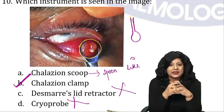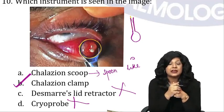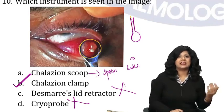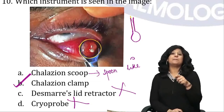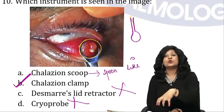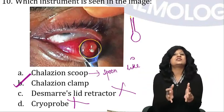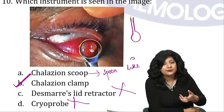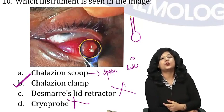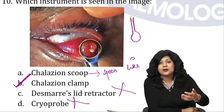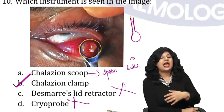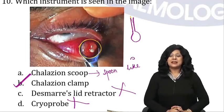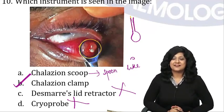Finally, which instrument is shown in the image? This is not a lid retractor or a cryoprobe. The only confusion is whether it's a scoop or a clamp. A scoop is spoon-like — you use it to scoop out contents, and a hollow empty thing cannot do that. This is actually a caliper clamp, used for fixing the sclera and placing the indent. So it is very clearly a caliper clamp. That was the quiz on investigation tools in ophthalmology. Keep studying, keep working hard — stay home, stay safe, and happy ophthalmology.